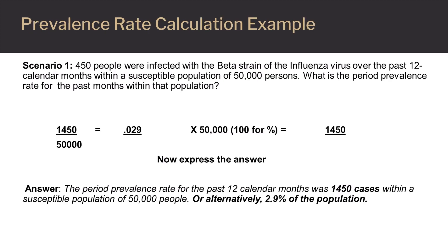This slide details an example of how to calculate a prevalence rate in which 450 people had been diagnosed with the beta strain of the influenza virus within the past year, with a susceptible population of 50,000 persons. Note the final answer can either be expressed as a percent or the quantified amount of people per population size.